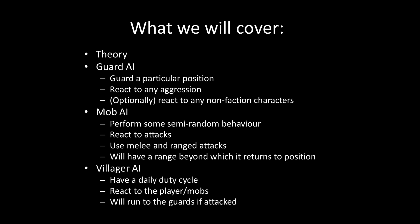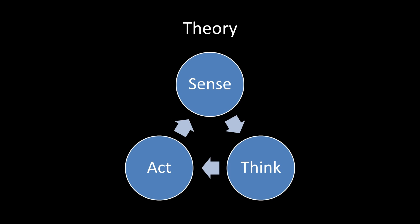Traditionally when you think of AI, most people think of three stages of interaction. Characters have to sense something about the world, that leads into some decision-making process, and then finally you perform some action. We call this a sense-think-act cycle — a continuously looping cycle where the AI senses the world, decides what to do, and acts on those decisions.